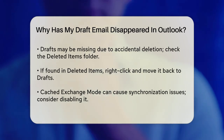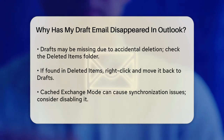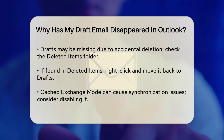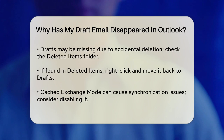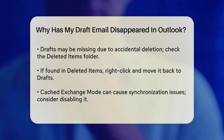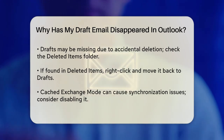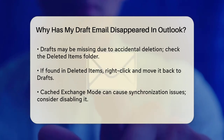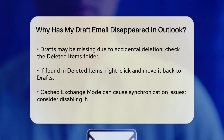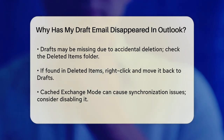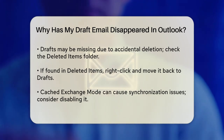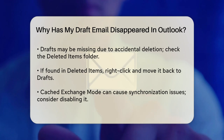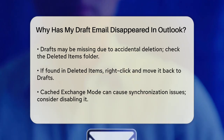Another common reason drafts disappear is if they were accidentally deleted. Check the Deleted Items folder by navigating to it on the left side of the Outlook window. If your draft is there, you can move it back to the Drafts folder by right-clicking on it, selecting Move, and then choosing Drafts.